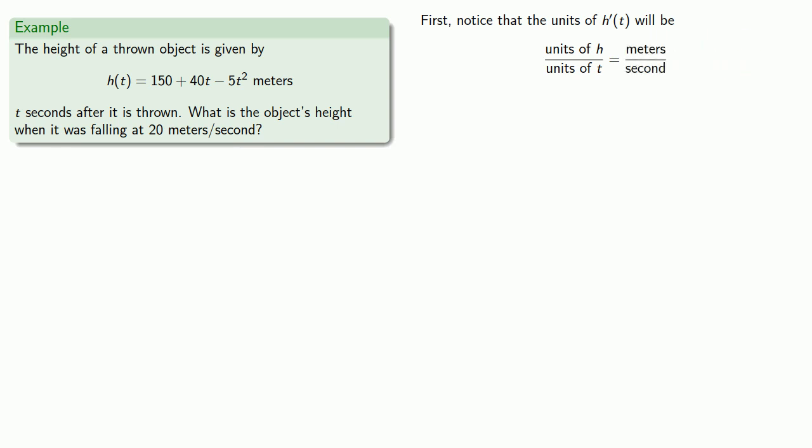So that will be meters per second. And the thing to notice is that in our question, there is a reference to something that is measured in meters per second. And that suggests that h prime of t will have something to do with our problem. So let's find the derivative.